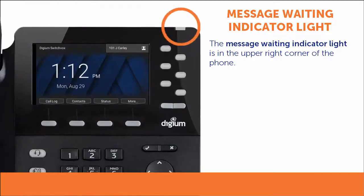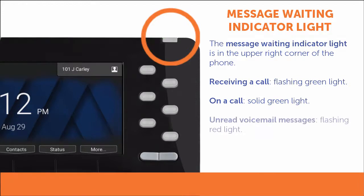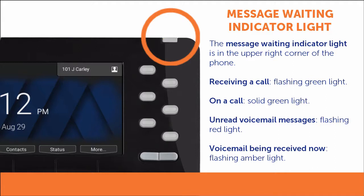In the upper right corner of the phone is the message waiting indicator light. A flashing green light indicates that you are receiving a call. A solid green light indicates that you are currently on a call. A flashing red light indicates that you have unread voicemail messages in your inbox. A flashing amber light indicates that someone is leaving you a voicemail right now.